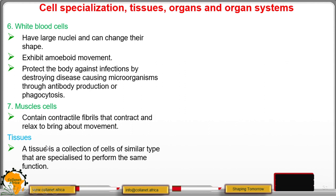We move to tissues. And a tissue is a collection of cells of similar type that are specialized to perform the same function. So similar cells form a tissue.